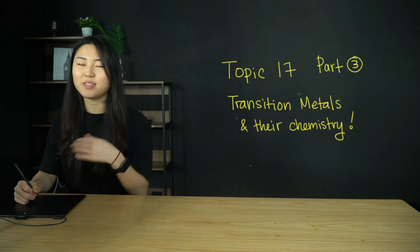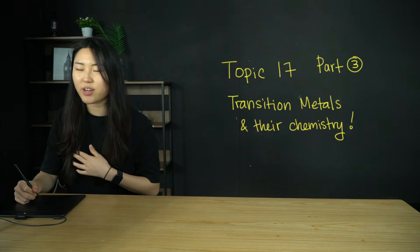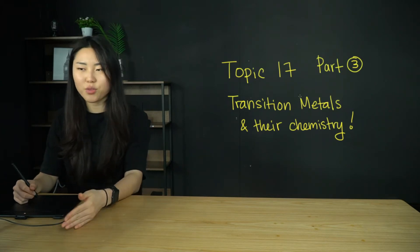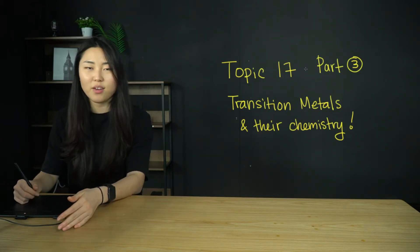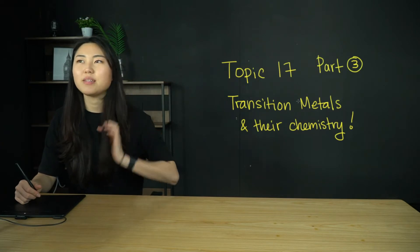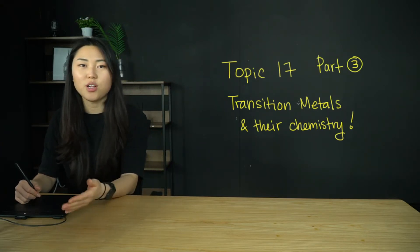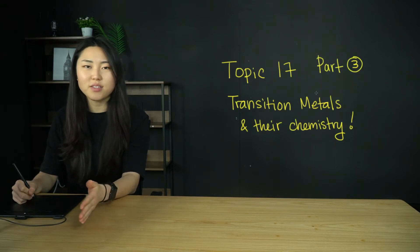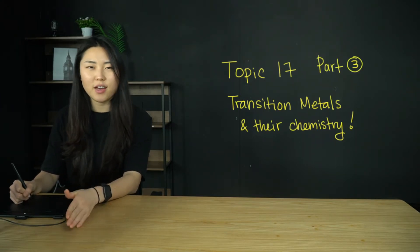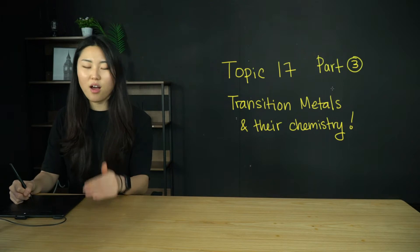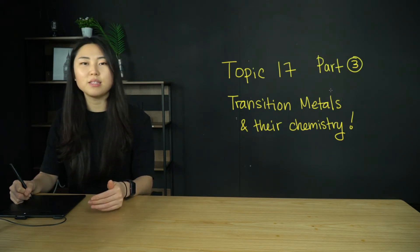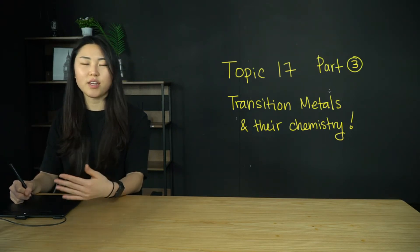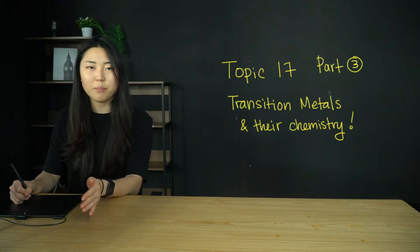In this video, I will be discussing transition metals and their chemistry. This is part three of this topic. I have been discussing the general chemistry and chemical properties of transition metals. In part two, I looked at the example of vanadium and the color changes associated with changing oxidation numbers.